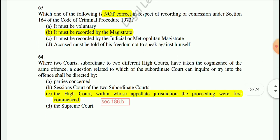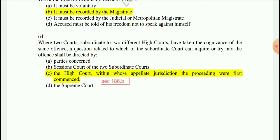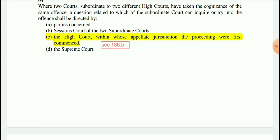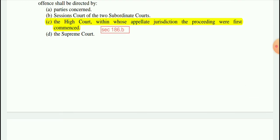Question 64: Where two courts subordinate to two different High Courts have taken cognizance of the same offense, a question as to which subordinate court shall inquire or try the offense shall be directed by — the answer is C — the High Court within whose appellate jurisdiction the proceedings were first commenced. This is provided in Section 186, clause (b) of CrPC.